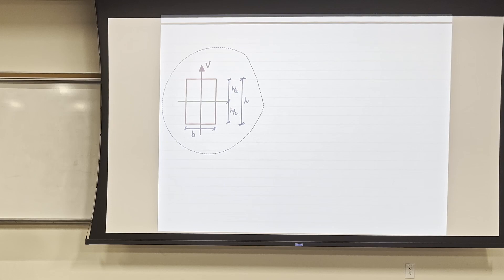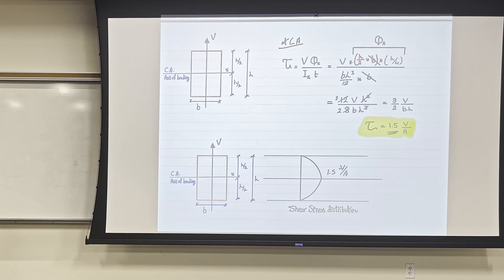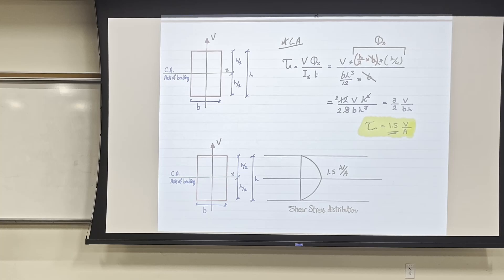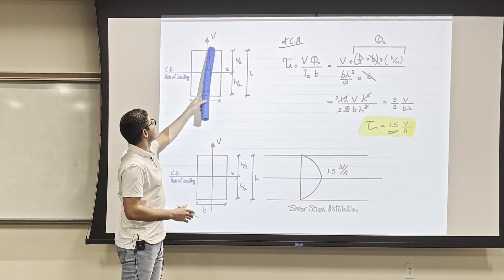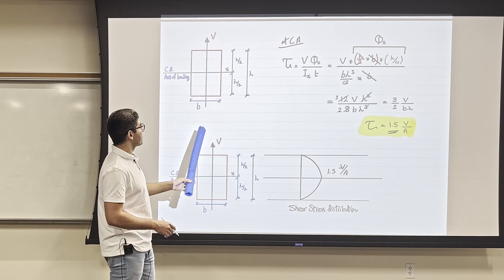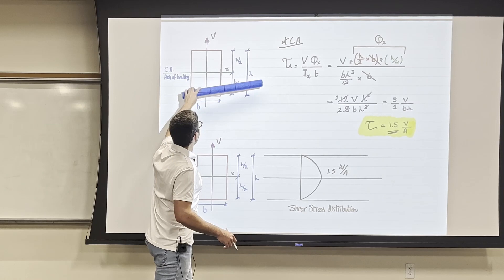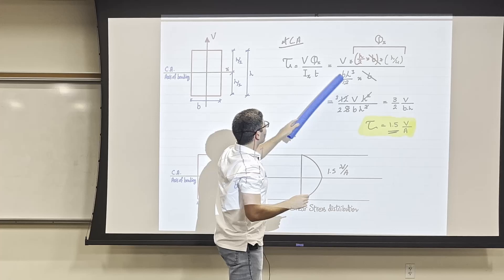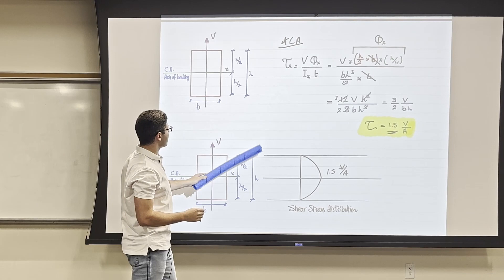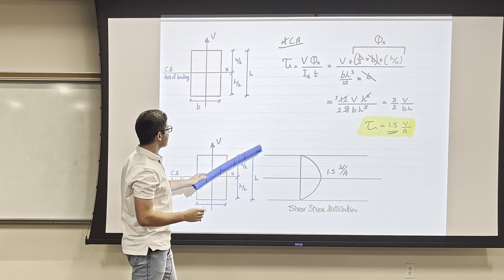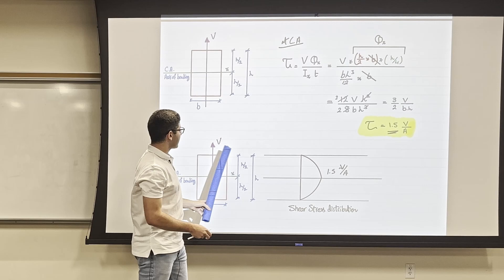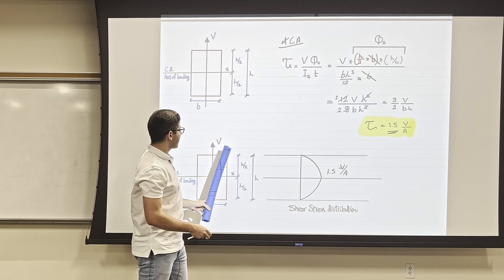For a rectangular cross-section, since the width is constant, the only interesting point is the centroid. Using τ = VQ/It with Q = (H/2 × B) × (H/4), you find that the maximum shear stress at the centroid equals 1.5V/A. This is worth memorizing for rectangles — it makes drawing the shear stress distribution much easier.